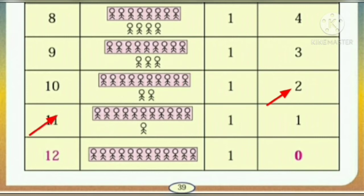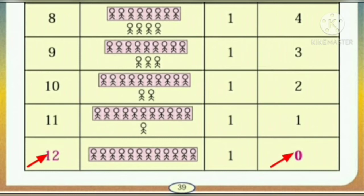The next number is 11. Now how many members are left out? Only 1 member is left out; the others make 1 group. And the last number I have announced is 12. Now no one is left because all 12 members make 1 group without any leftover.